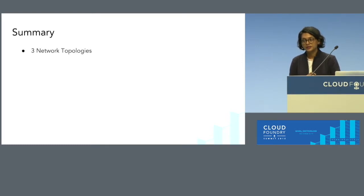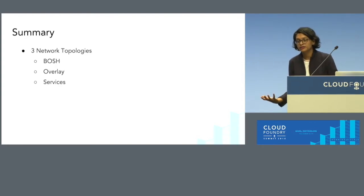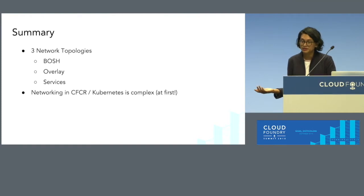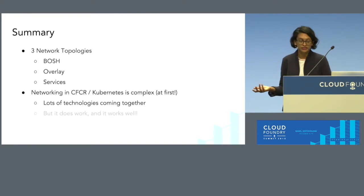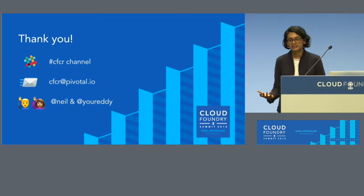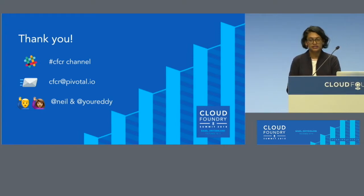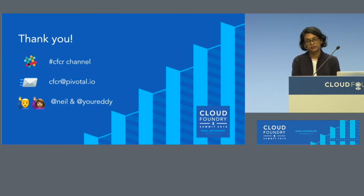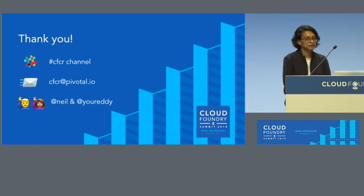In summary, we covered the three networking topologies — how BOSH works, how the overlay network works in CFCR, and Kubernetes services, with a deep dive into each. It may seem complex at first, but it's many technologies coming together to make a great experience. Thank you for coming to our talk. If you want to discuss networking or anything CFCR-related, find us in the CFCR channel in the Cloud Foundry open source Slack, or shoot us an email. We'd love to hear about different networking use cases and CNIs you want to see in CFCR.